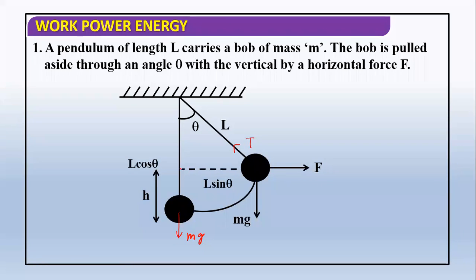The displacement in the direction of the external force is L sin theta. So work done by force F will be F times L sin theta. Work done by tension will be zero. Why zero? Because the tension is upward and the displacement is horizontal, so these two are perpendicular.